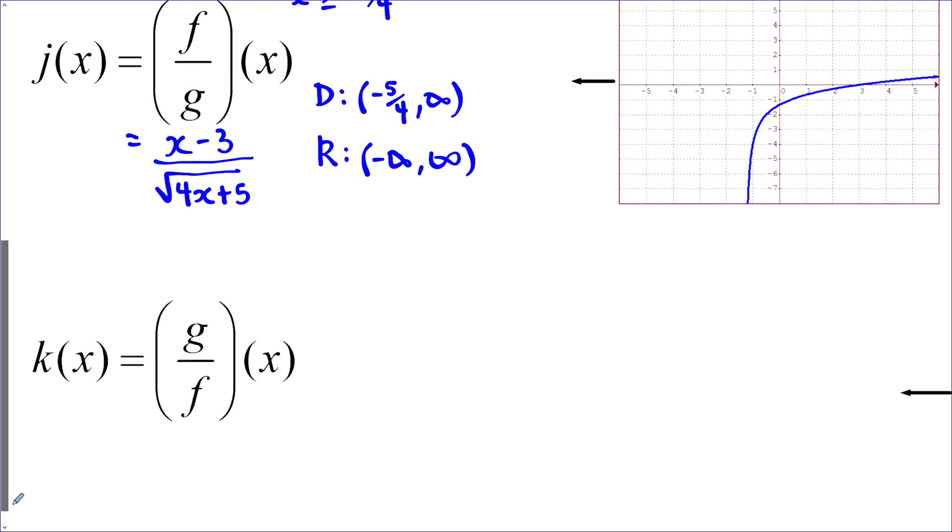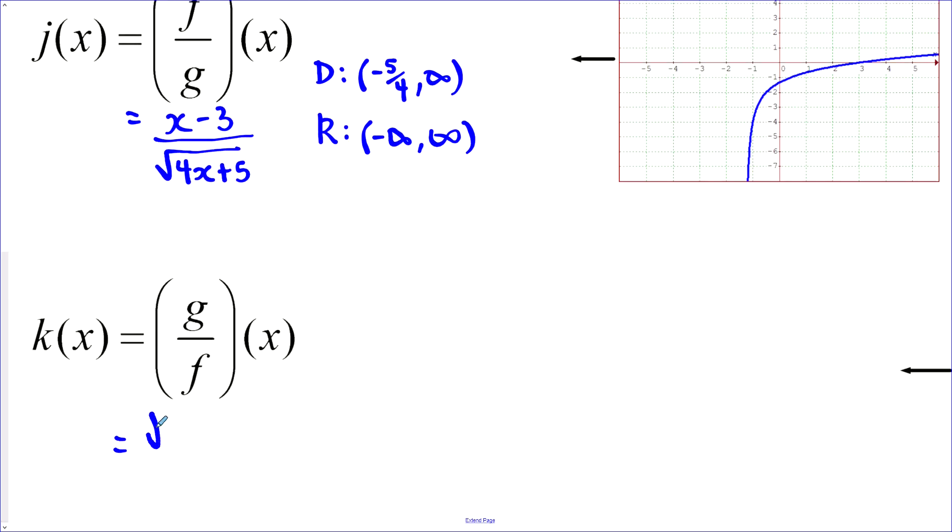The last one on this page is the opposite or the reciprocal. So we've got the g(x) on top and f(x) in the denominator. Now we have this radicand needs to be greater than or equal to zero. But we've also got this denominator. This cannot equal zero. And so x minus 3 cannot equal zero. So that means x cannot equal 3. And we have to worry about that because when we build our domain here, we've got greater than or equal to negative 5 over 4. And we can go all the way up to 3. And we can't include 3. And then we can keep going with 3 to infinity.